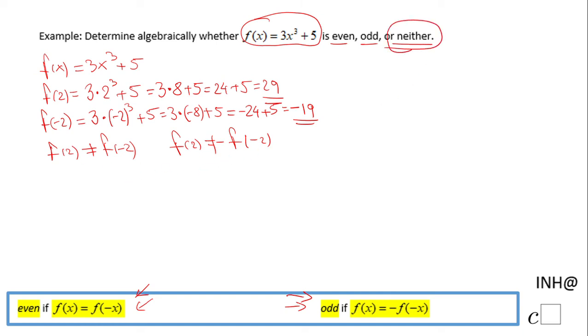It's neither, which most functions you'll work with are. But let's do an algebraic process. I'm going to find f(-x), which is 3(-x)³ + 5.